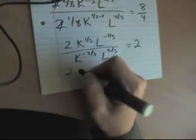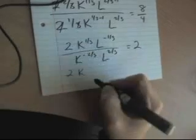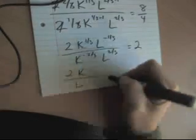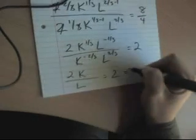So negative exponent flips the other side of the dividing line. 2, K to the 1/3 plus 2/3 is just K. L to the negative 1/3 flips the other side of the dividing line, L is equal to 2. So that tells us that K over L divided by 2 is 1. That is the capital labor ratio. So now we know that K is equal to L. Capital labor ratio is equal to 1. What else do we know?